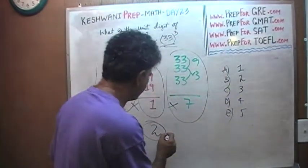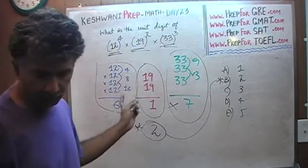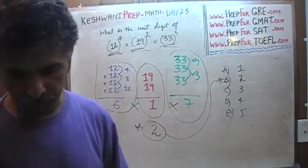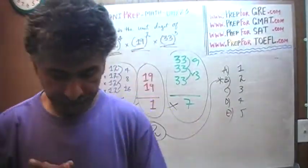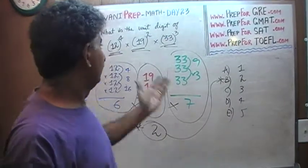There we go. And the correct answer, of course, is B. The product of these three numbers should end in a 2. That's all. The unit digit of this product is 2. I hope you found it helpful.